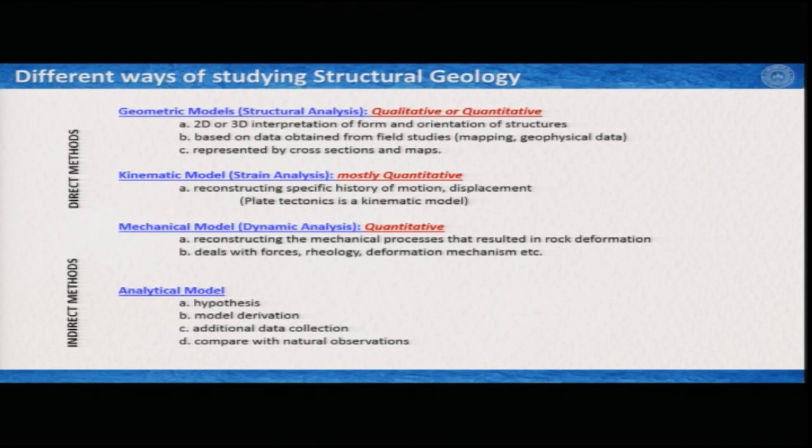Geometric models are mostly qualitative and sometimes quantitative. They do not involve detailed scientific analysis — they simply try to interpret from what we are observing its 2D or 3D representation, its orientation, in a more comprehensive way. These are mostly done using some data obtained from field studies or some experiments.